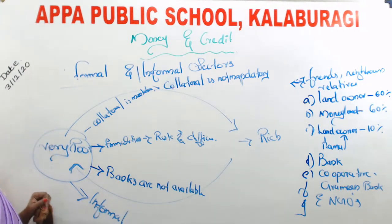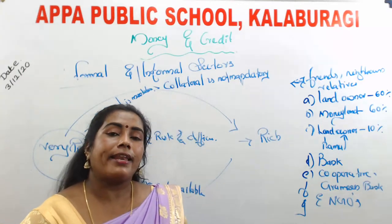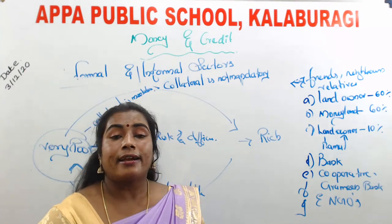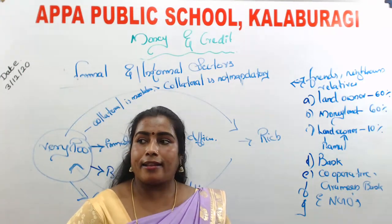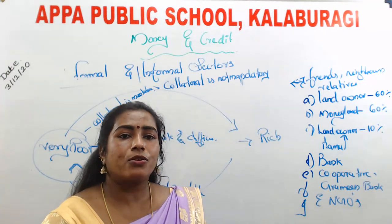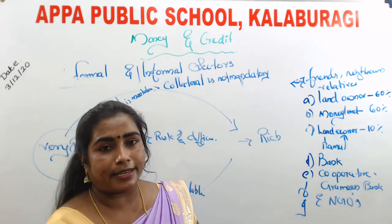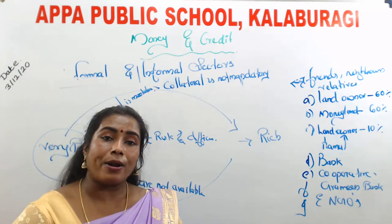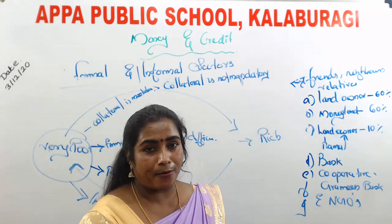Neighbors, landowners, or moneylenders know the poor person. Whenever they need money, they provide it without formal conditions — no documentation, no strict time limit for repayment, and they can even get a second loan without paying the first. So poor people are dependent on the informal sector.